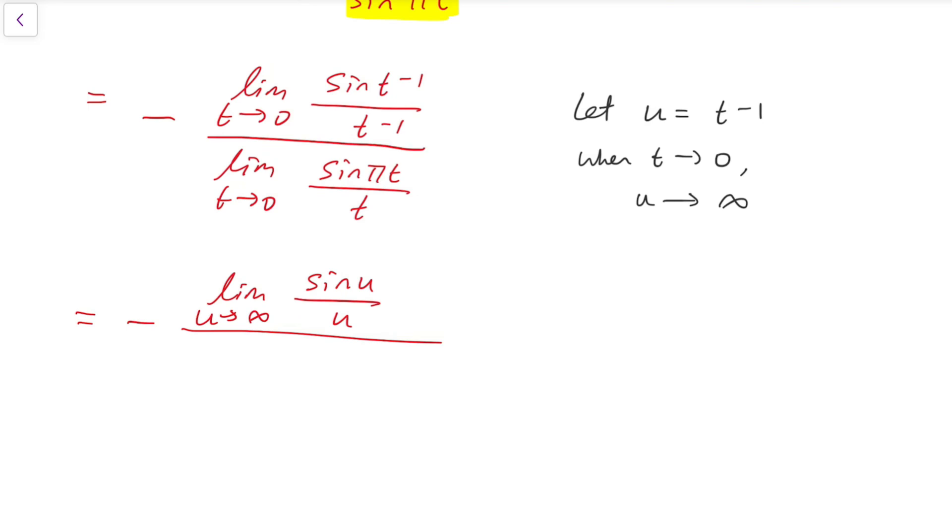While for the denominator, I'm going to multiply both parts of the fraction inside the limit by π. And so we have π times limit of sin(πt) all divided by πt when t tends to 0.